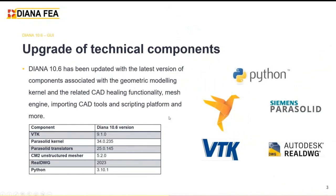I'll start by discussing the upgrade of our third-party software. We upgraded first our Siemens Parasolid, our geometric engine to generate model geometry. We also upgraded VTK, the tool for visualization of the model, mesh and results. Then we upgraded the CM2 mesher, the engine used to discretize the geometry into a finite element mesh. We also upgraded our AutoCAD RealDWG import tool that allows users to import and heal CAD geometries. Finally, we upgraded the scripting platform Python to 3.10.1.